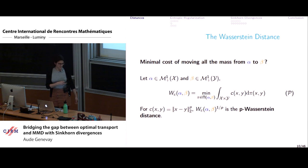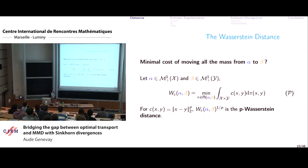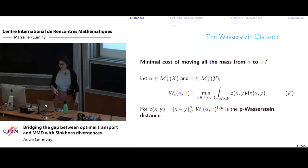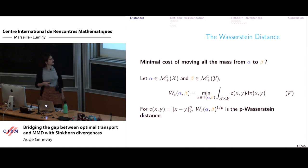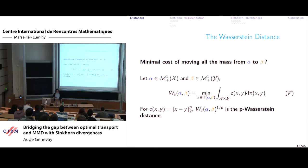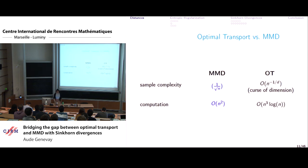Mathematically, you minimize over the set of coupling measures with marginals alpha and beta, looking at the total cost of moving mass from alpha to beta. The classic choice of cost is some power of the Euclidean distance — that's what we call the p-Wasserstein distance. When you take the p-th power of the Euclidean distance as cost, it satisfies all the axioms of a distance and metrizes weak convergence.